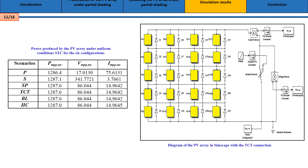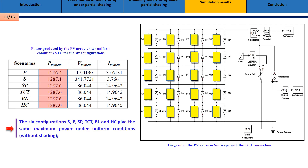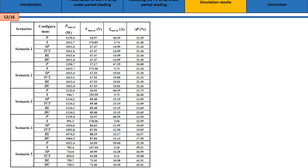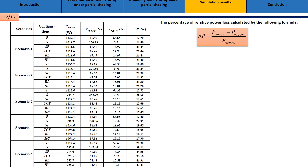Finally, Scenario 5 — a random distribution of shading. This table shows the power produced by the PV array under uniform conditions for the six configurations. We conclude that all six configurations give the same maximum power under uniform conditions. The solar irradiance values used in the simulation for the five scenarios are summarized in this table, along with the percentage of relative power loss.